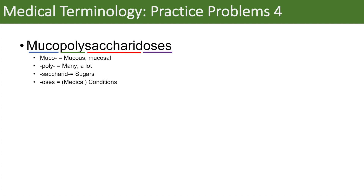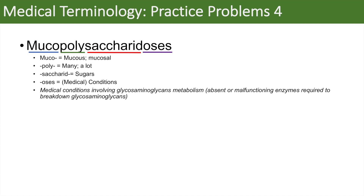When we put it all together, mucopolysaccharidosis refers to medical conditions involving glycosaminoglycan metabolism. Glycosaminoglycans are actually mucopolysaccharides, and the osis represents the medical conditions. These conditions are due to absent or malfunctioning enzymes required to break down glycosaminoglycans, resulting in issues with glycosaminoglycan metabolism.